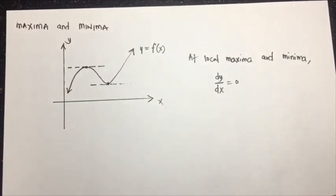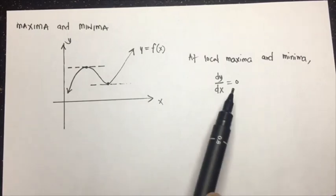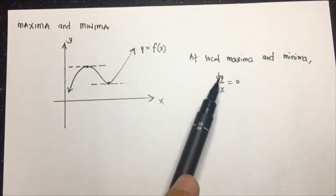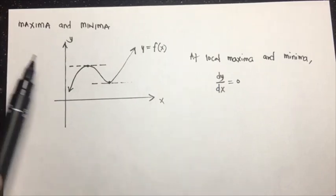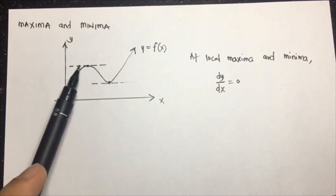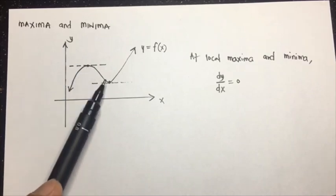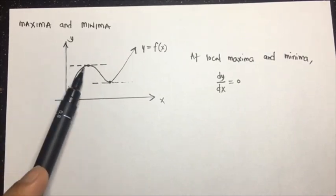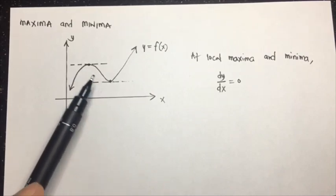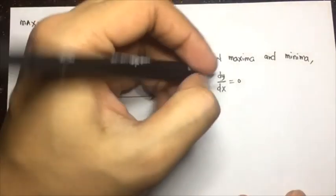Basically, all we need to do to find the local maximum and minimum points is to set the derivative to zero. But in doing so, we will not be certain if what we solved is the maxima or the minima without graphing it. So what we can do is use the second derivative test.